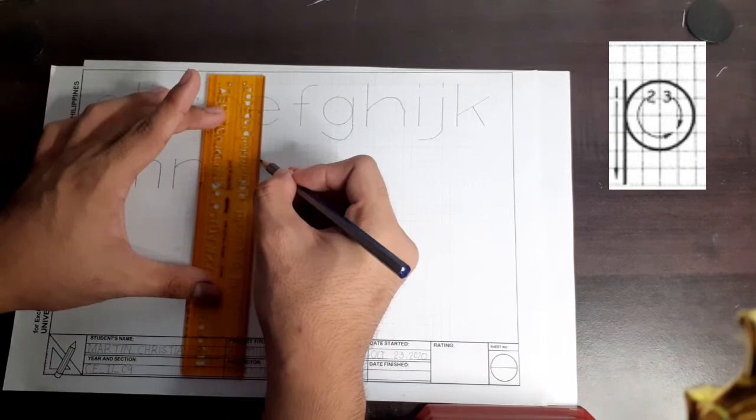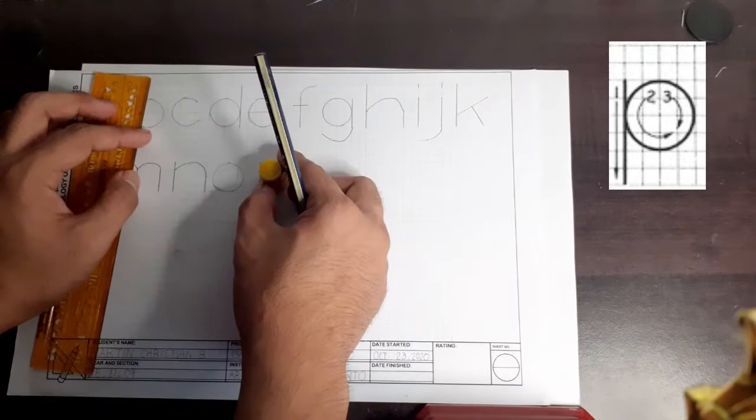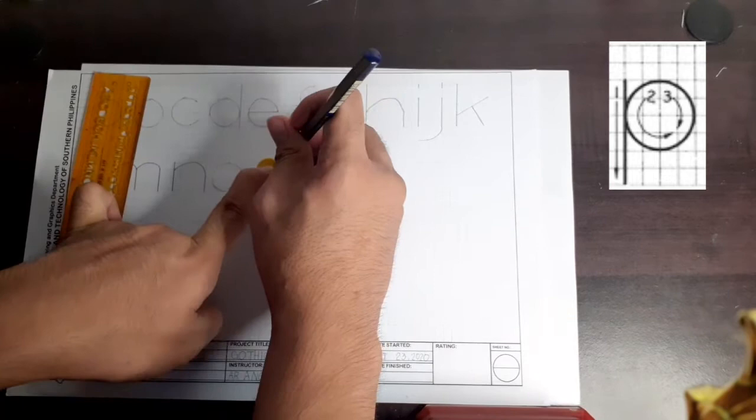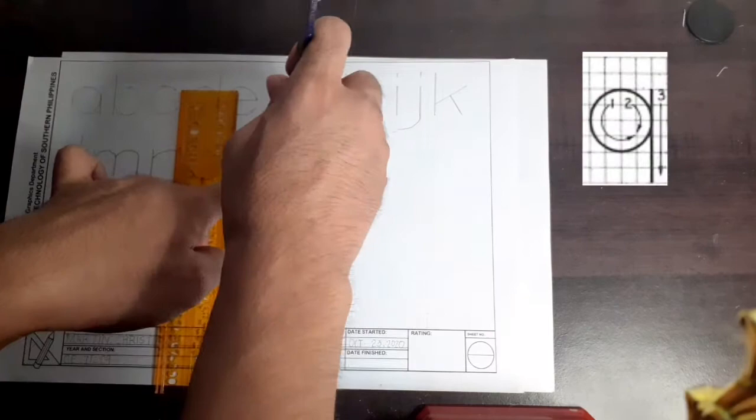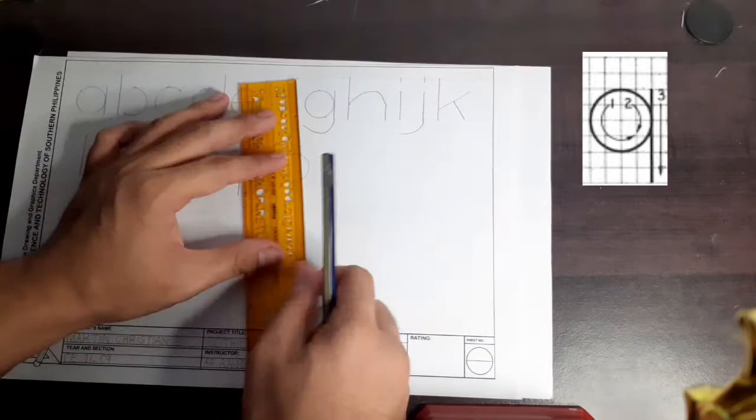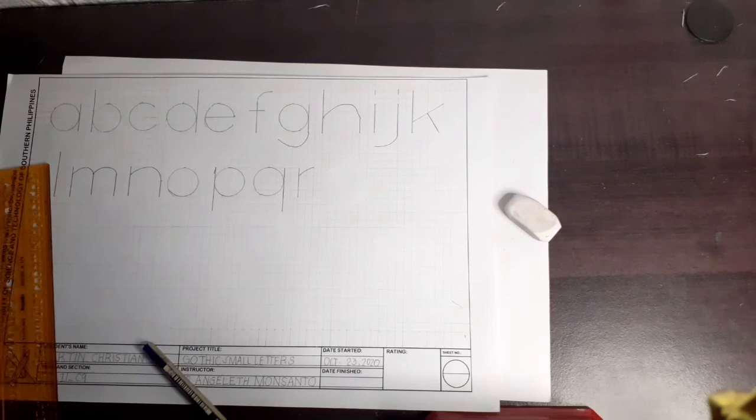For letter P, first drawn is a vertical line going downwards. And the last preceding steps is just the same on how we wrote letter O. While Q is the opposite of letter P. First drawn is the circle, and lastly is its vertical line going downwards.